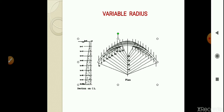The variable radius arch dam is one in which the radii of the upstream face or the downstream face do not remain constant at various elevations of the arch dam. That particular dam is known as variable radius arch dam.